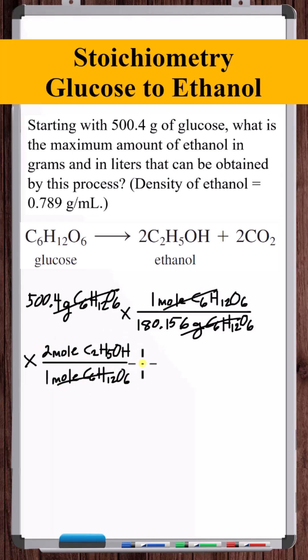The molar mass of ethanol is 46.068 grams per mole, so now the units are in grams of ethanol. If we do this multiplication, we get 256 grams of ethanol.